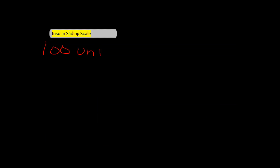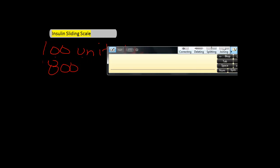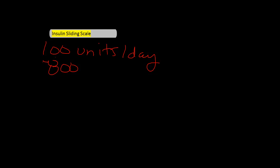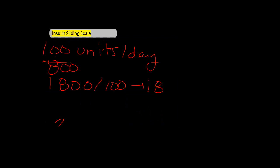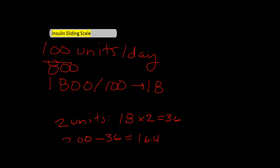Now let's change this up. What happens if our patient was taking 100 units per day? Using this tool, we take 1800 and divide by 100, which gives us 18. So one unit of insulin will only drop our glucose by 18. If we used our previous standard protocol and the patient had a blood glucose of 200 and we give them only two units, two units will drop it 18 times 2, or 36 — subtracting that from 200 gives you 164, which is not really in the target range of 150. Therefore, you might consider putting them on the more resistant scale.